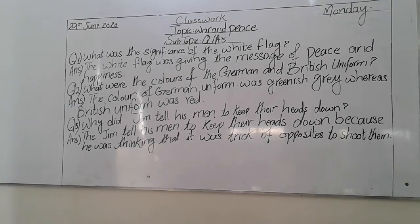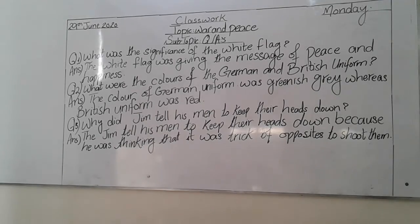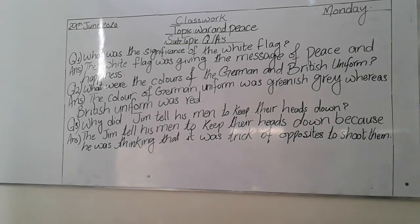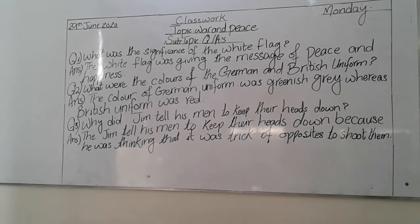I want you to write it down. The first question was: what was the significance of the white flag? The white flag was giving the message of peace and happiness. Question number two: what were the colors of German and British uniform? The color of the German uniform was greenish grey whereas the British uniform was red. Question number three: why did Jim tell his men to keep their heads down?